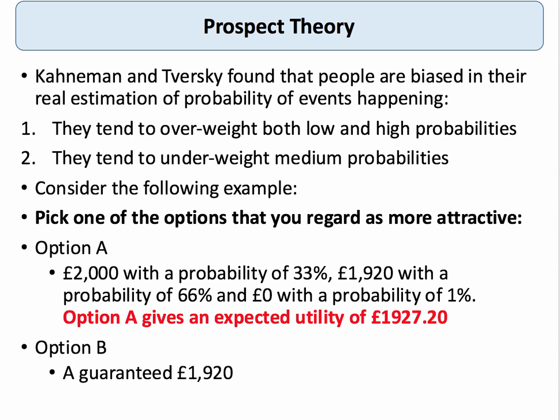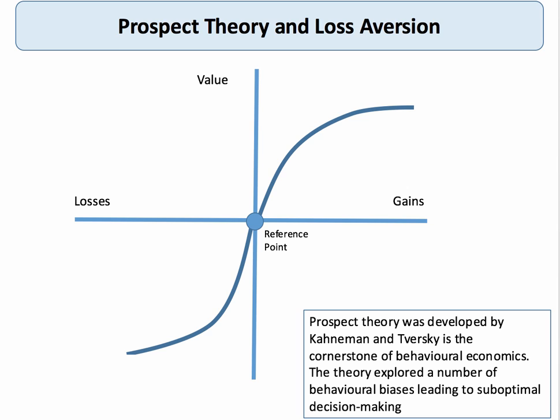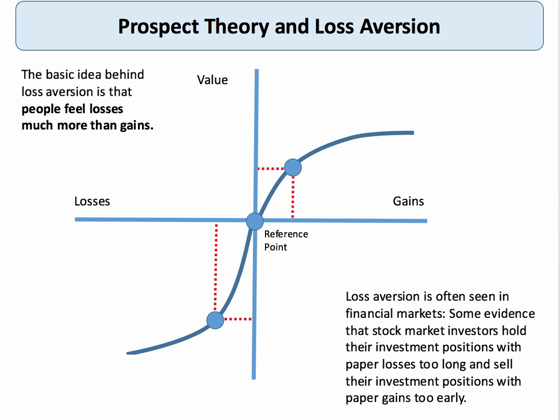Prospect theory and loss aversion can be illustrated in a diagram. On the X-axis we have losses and gains, and on the Y-axis values from positive through to negative. Taking a simple reference point — a particular price, for example — the basic idea behind prospect theory is that people feel a loss more than they feel a gain. For the same reference point, the value of a loss is greater than the value of an equivalent gain.